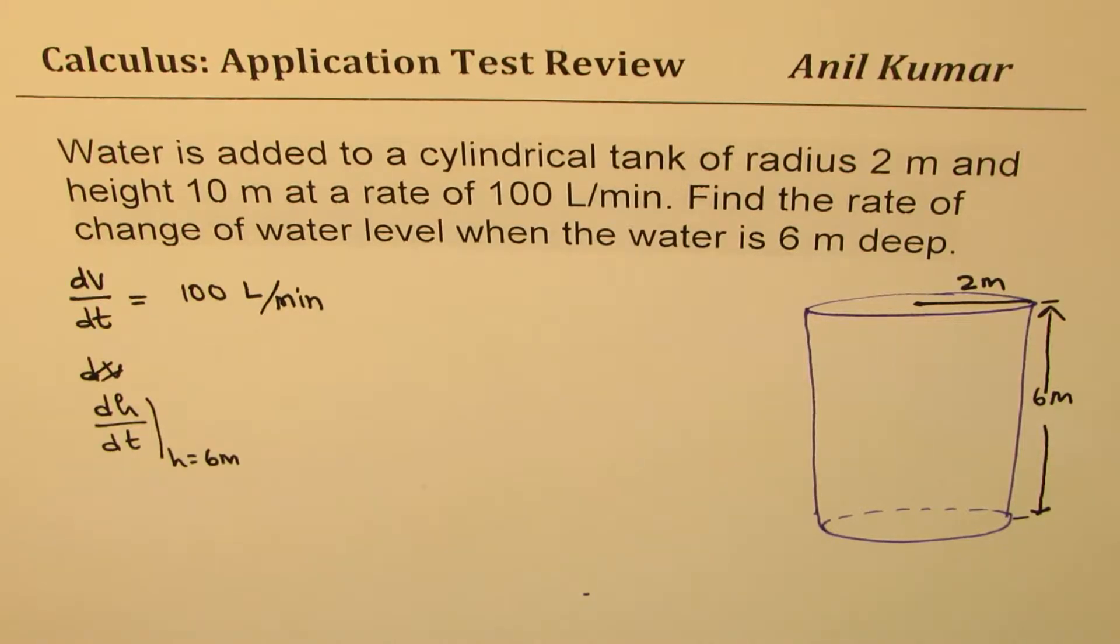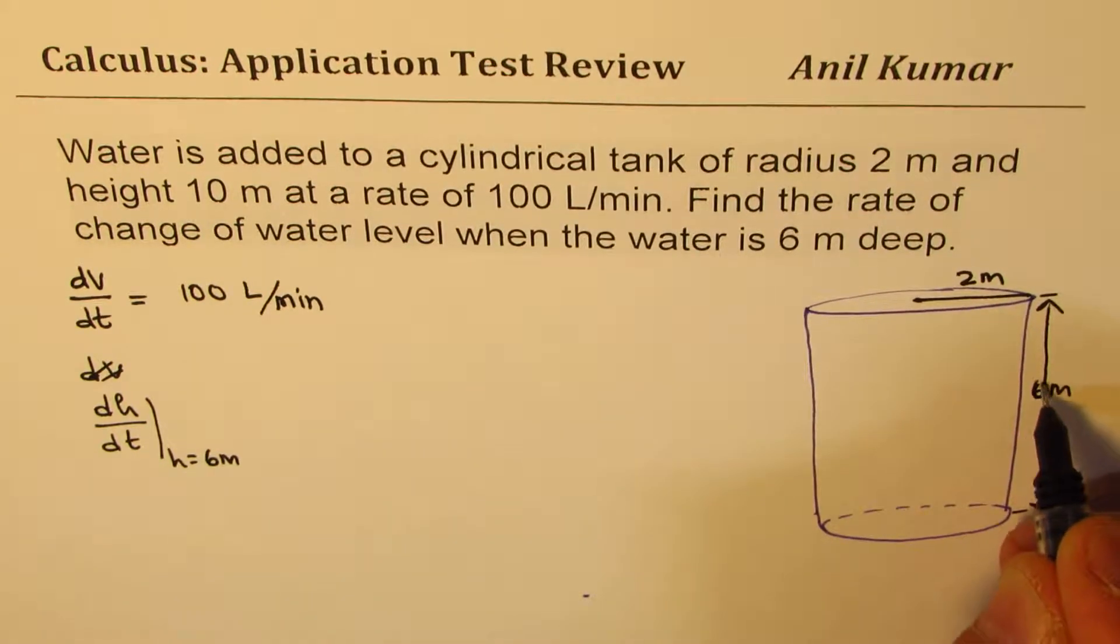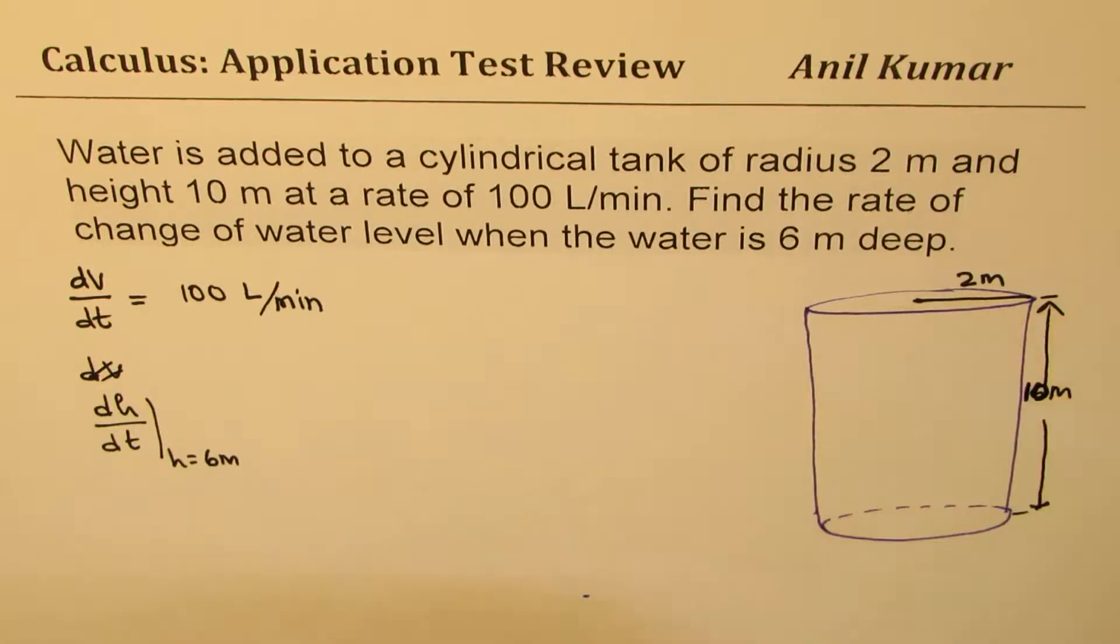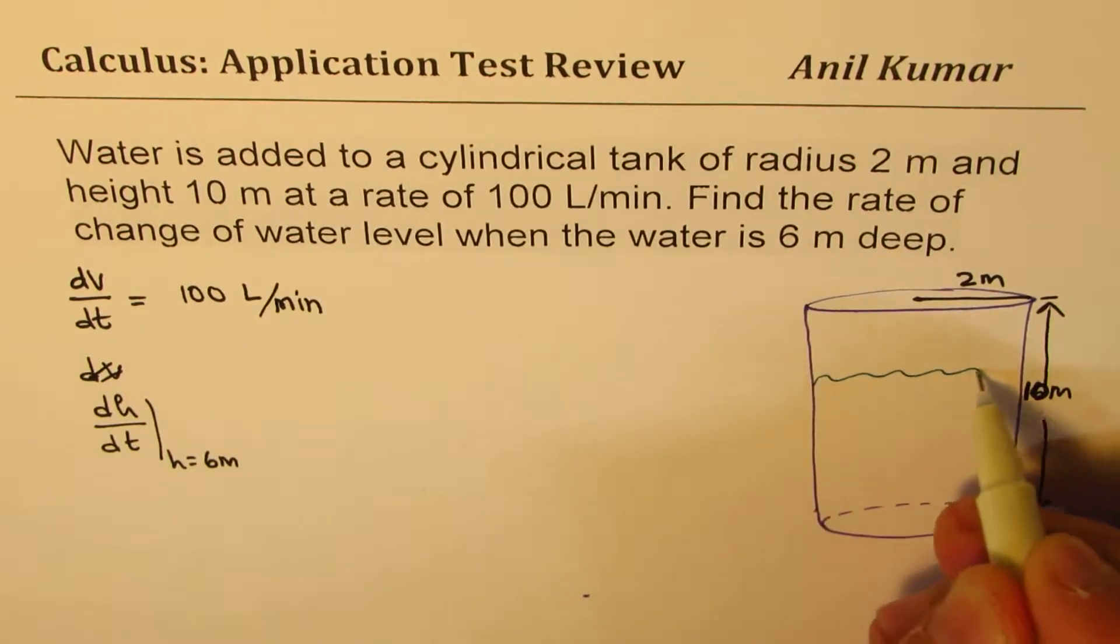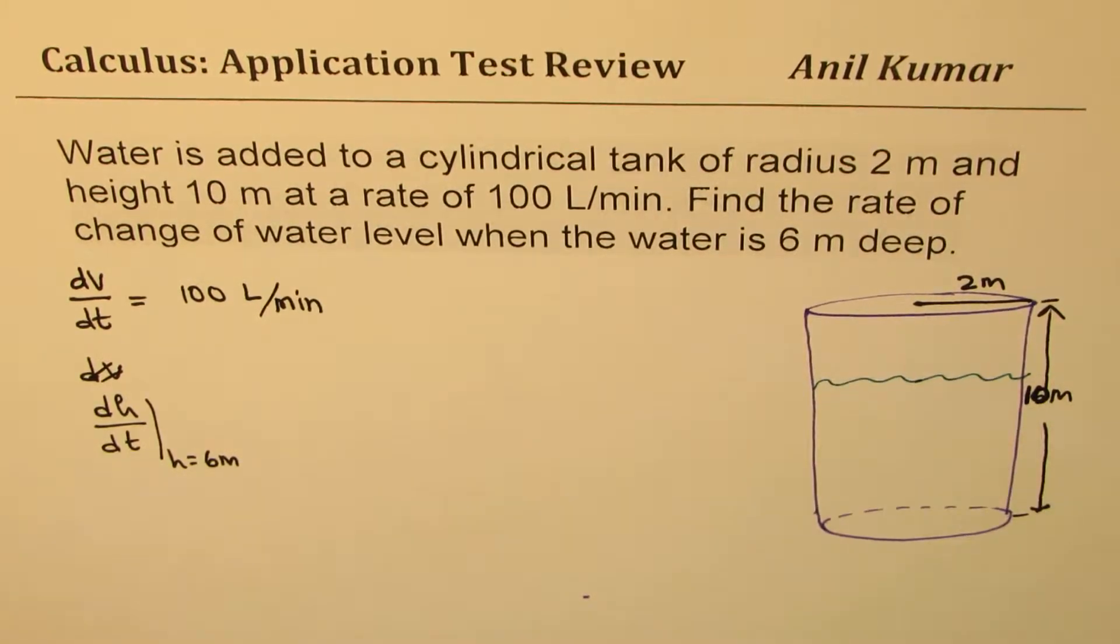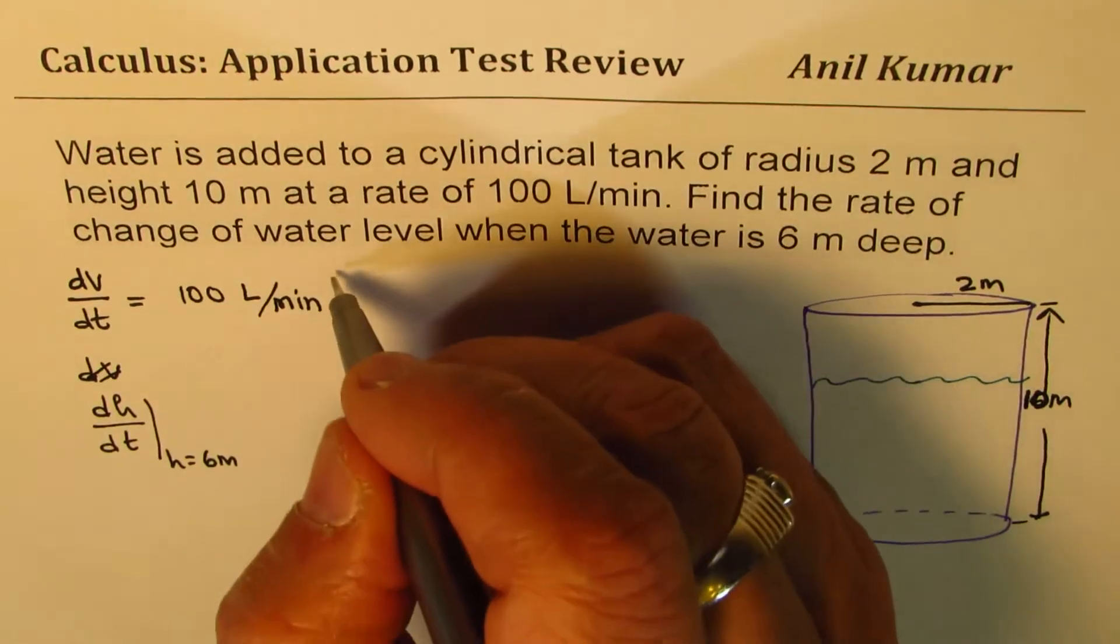We are given that the height is 10 meters. This is 10 meters. So 6 meters will be somewhere here. So at this instance, we have to find rate of change of height. Let us see how to do it.